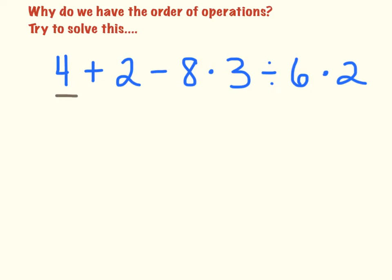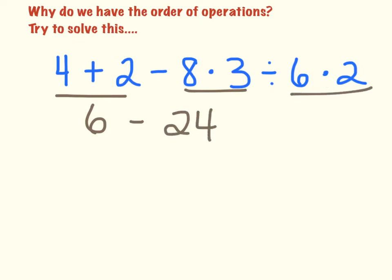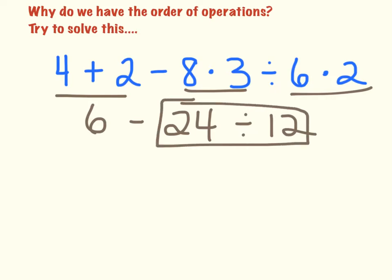Maybe somebody will do 4 plus 2 is 6, then 8 minus 3 and get 24, then 6 times 2 which is 12, and work it out that way. Maybe they'll say 24 divided by 12 is 2, and 6 minus 2 is 4. That's a possible answer to this problem.